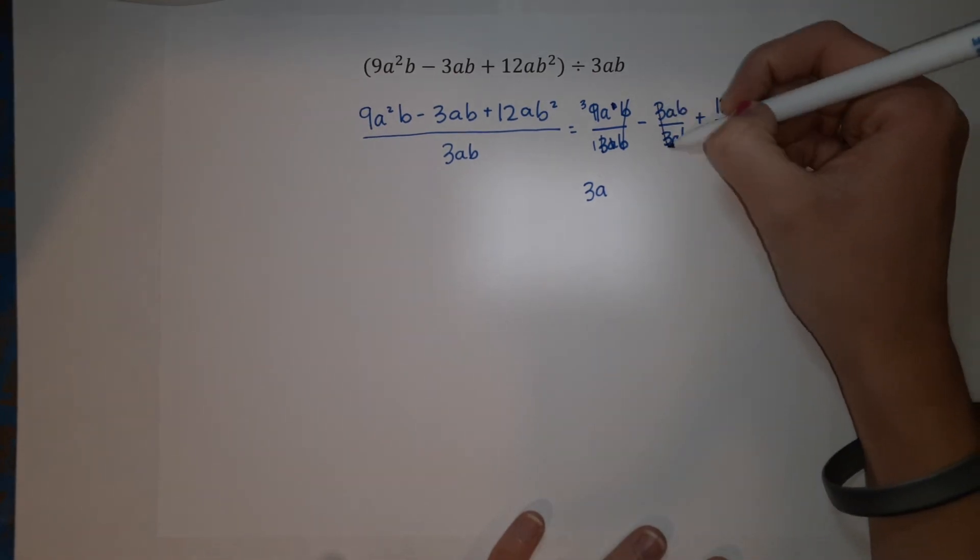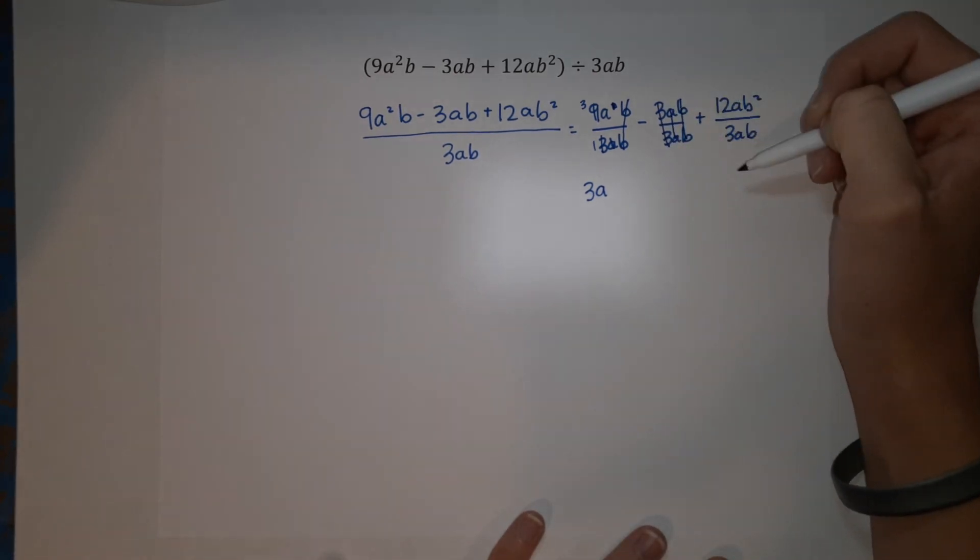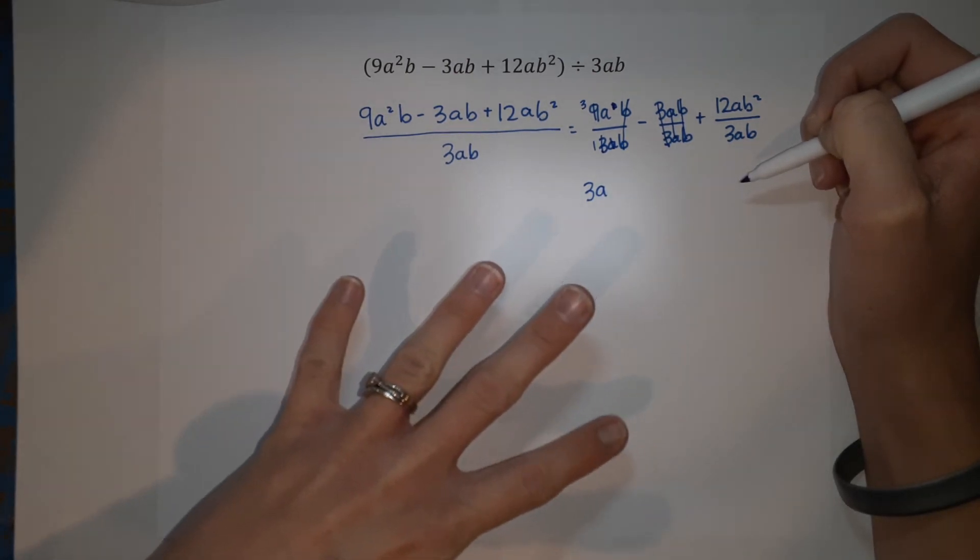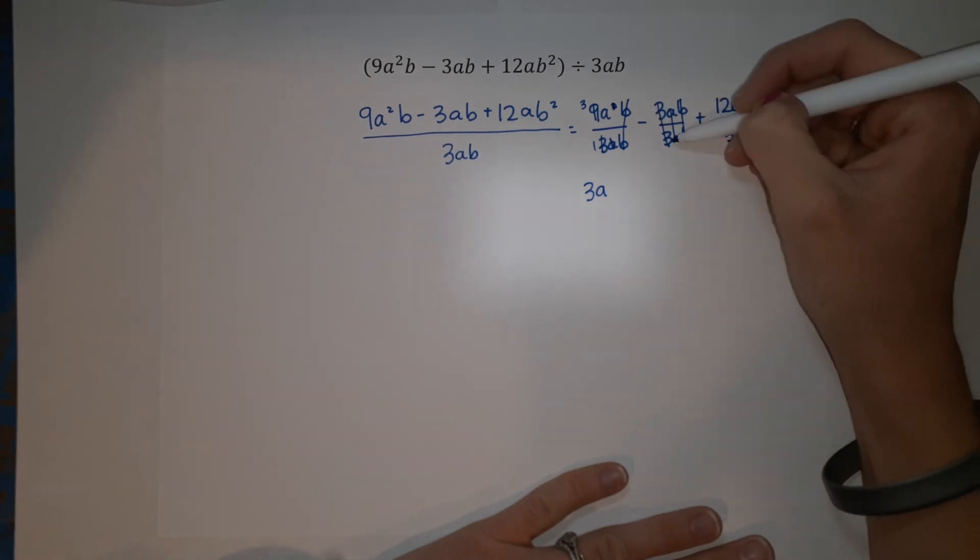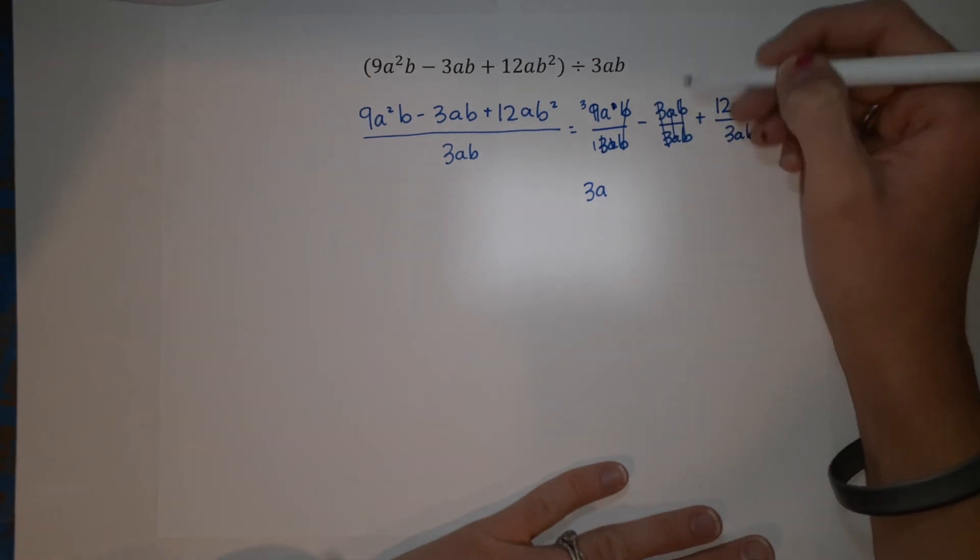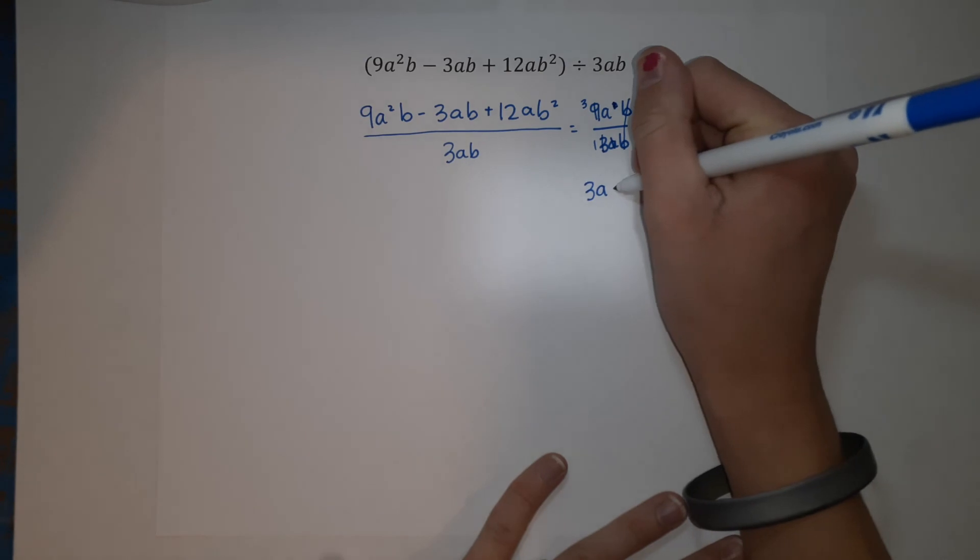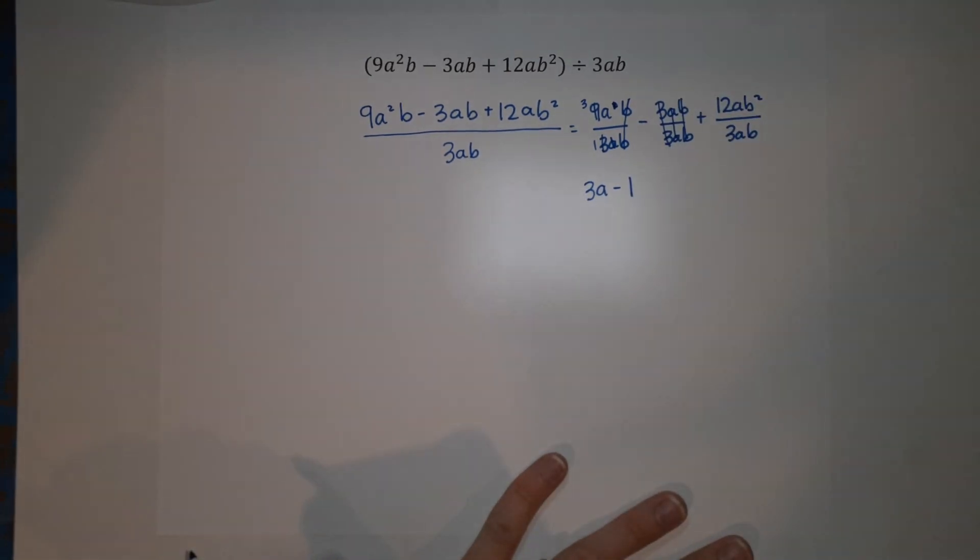This one, my 3s are going to cancel, my As are going to cancel, and my Bs are going to cancel. But that doesn't mean it's totally gone. What we're left with is a 1, or in this case, a negative 1. Because 3 goes into 3 once, A goes into A once, B goes into B once. So what we're left with is a 1.